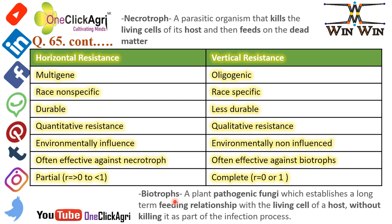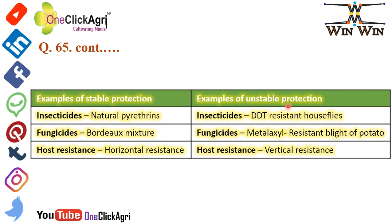Stable protection is related to horizontal resistance; unstable protection is related to vertical resistance. In stable protection, examples are insecticides such as natural pyrethrins and fungicides such as Bordeaux mixture — used against many pathogens. In unstable protection, examples of insecticides include DDT resistance in house flies, and fungicides include metalaxyl resistance to blight of potato — race-specific, which is vertical resistance.